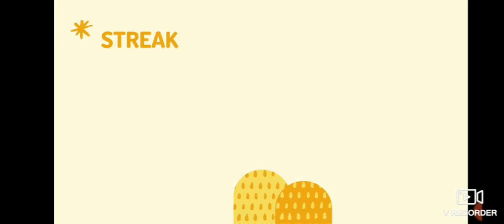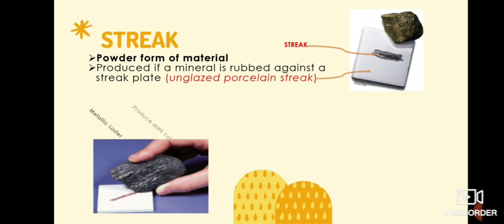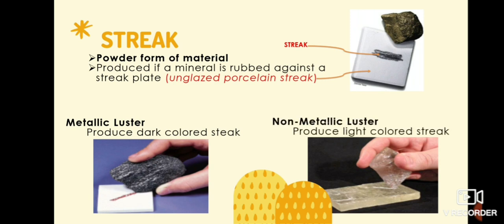Another optical property is the streak, or the powder form of a mineral. Streak is produced when you rub a mineral against a streak plate. In the example, you'll see that the mineral produced dark-colored streak. Dark-colored streak is usually exhibited by minerals which has metallic luster, while light-colored streak is produced by minerals which has non-metallic luster. Streak is usually consistent, even in minerals which exhibit different coloration.